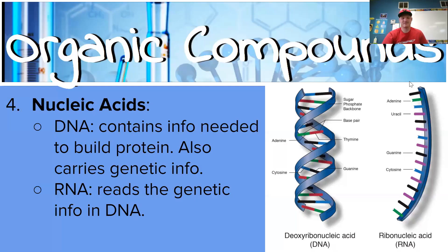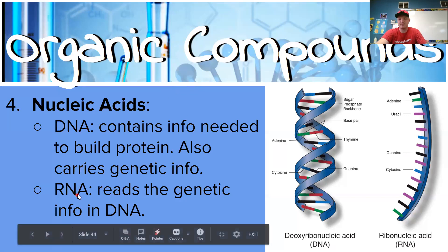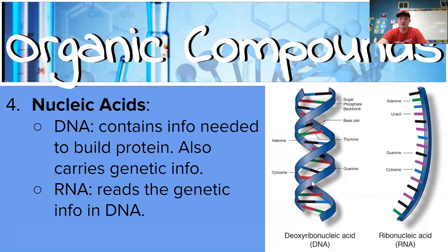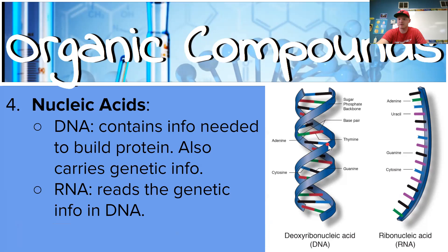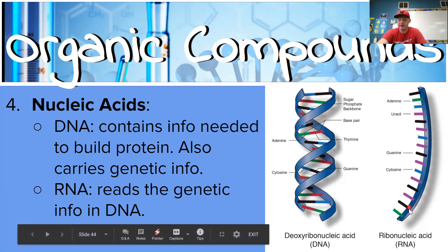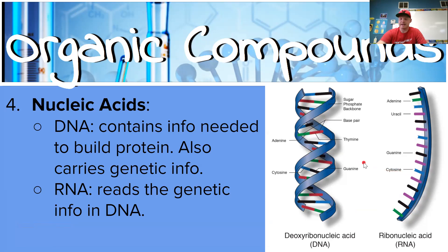Nucleic acids — we have two different types: DNA and RNA. DNA stands for deoxyribonucleic acid. RNA stands for ribonucleic acid. DNA contains the info needed to build protein, and this is where all of your genetic information is carried. You won't be tested on naming everything in the DNA molecule, but I wanted to show you what DNA looks like. RNA reads the genetic info within DNA — it attaches to the DNA and takes what it reads from it.